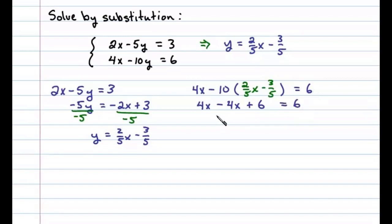And we can see there that has to equal 6. 4x minus 4x is 0, and we're left with a true statement: 6 equals 6. This tells me the original linear system is a dependent system. The lines are actually the same.